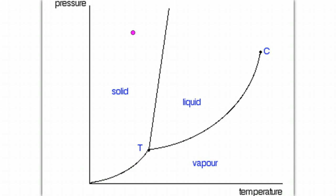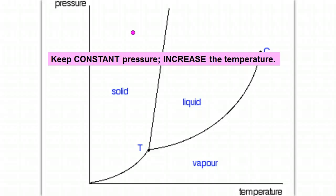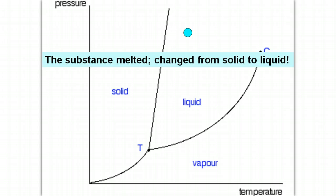So here we have our substance in the solid phase and the question is if you keep the pressure constant but you increase the temperature, what should occur? So if pressure is not changing but the temperature is increasing, then you'll notice that our substance can change from solid to liquid. So therefore the substance has melted, changed from solid to liquid.